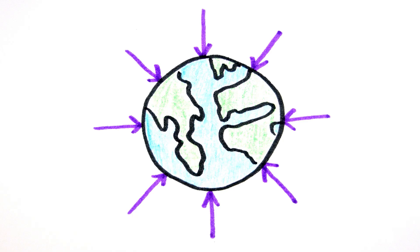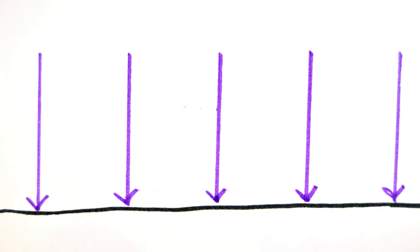In this case, the field is radial and equally spread around the Earth. On the surface of the Earth, the gravitational field is approximately uniform because the field lines are virtually pointing in the same direction and are equally spaced.